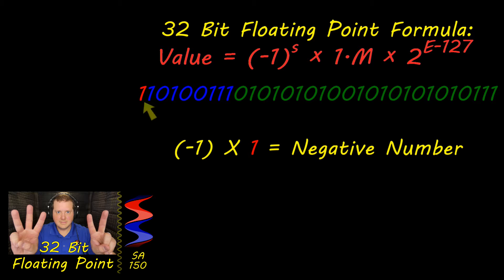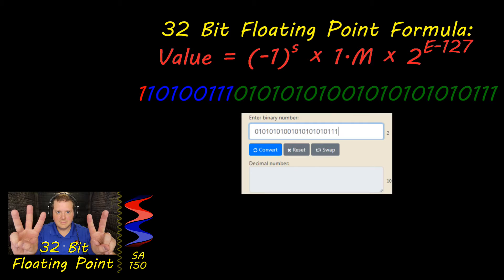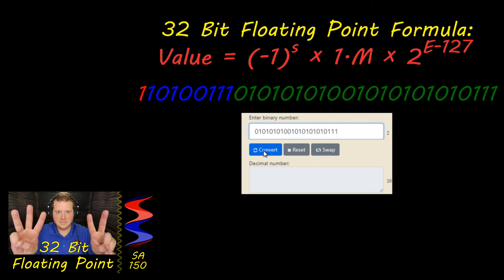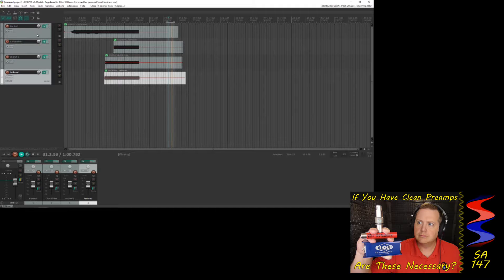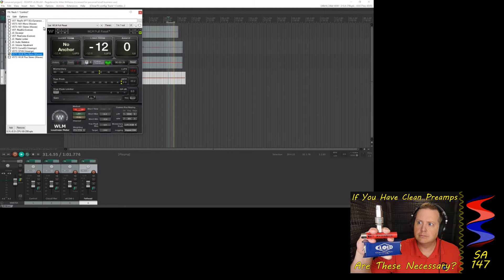Negative 1 times the sign value will tell you if the rest of the number is positive or negative. Next you write one point — the value of the 23-bit integer. This is actually a 24-bit value, though the 24th bit is hidden and referred to as the phantom bit.